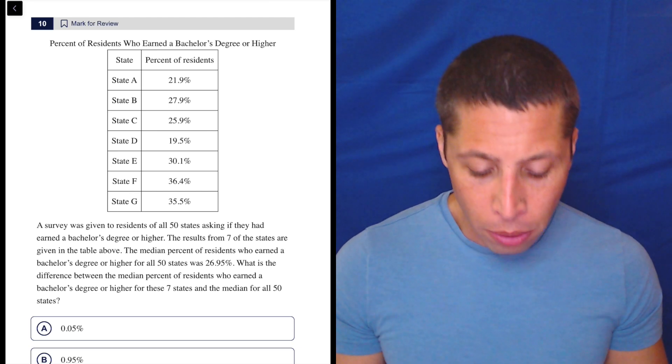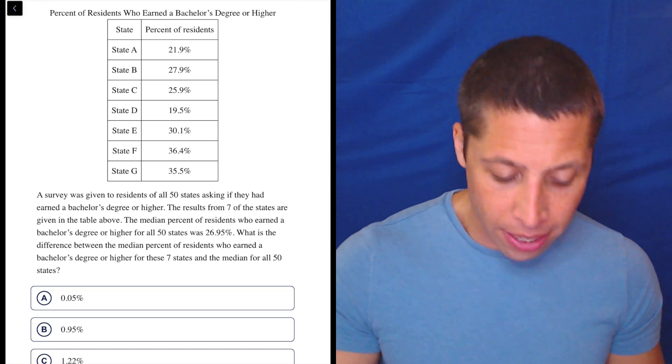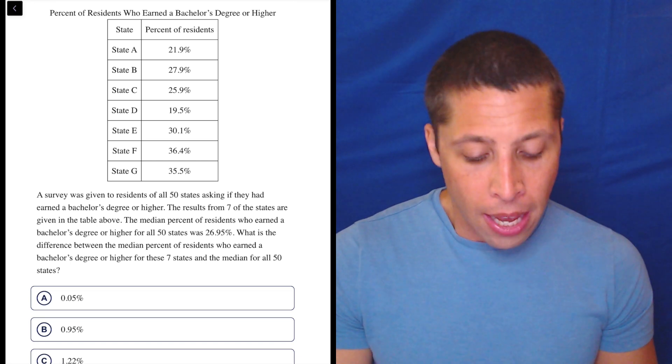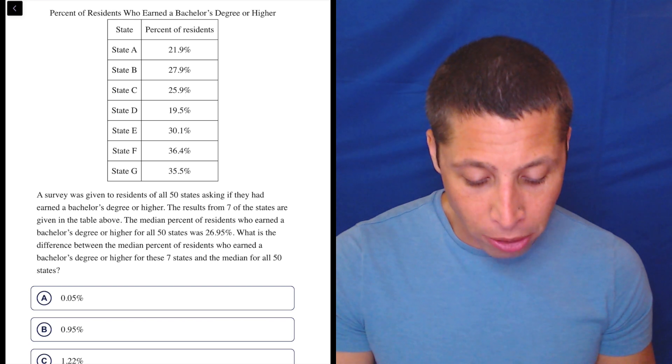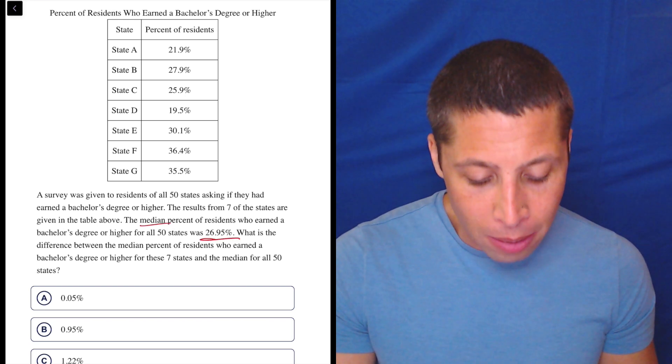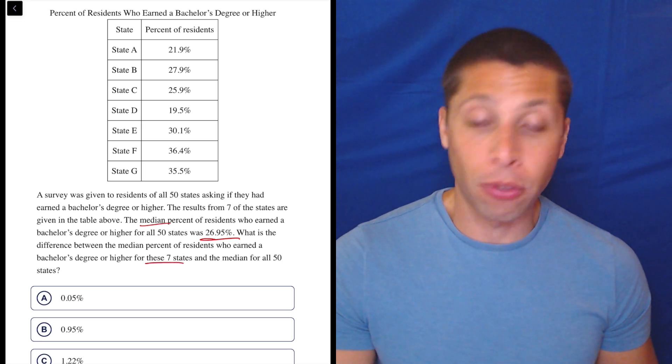But what a lot of people would do is they'd read this, okay, survey was given to residents of all 50 states asking if they'd earned a bachelor's degree or higher, the results from seven of the states are given in the table above. The median percent of residents who earned a bachelor's degree or higher for all 50 states was 26.95%. What is the difference between the median percent of residents who earned a bachelor's degree or higher for these seven states and the median for all 50, right?